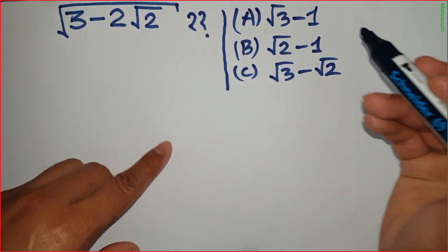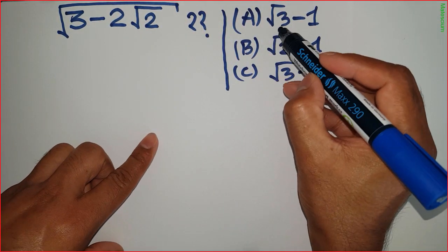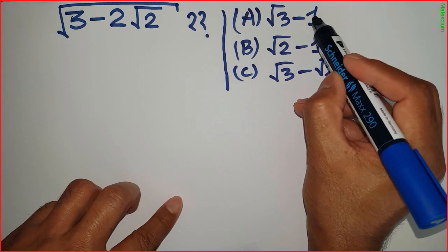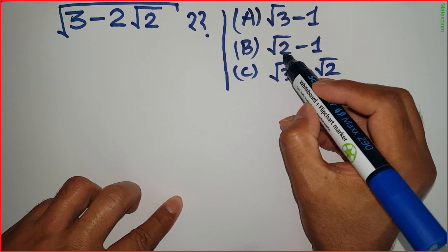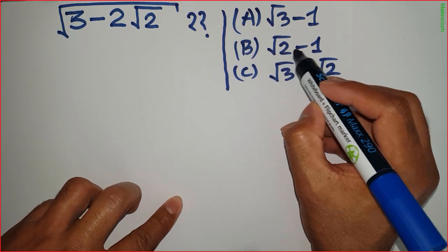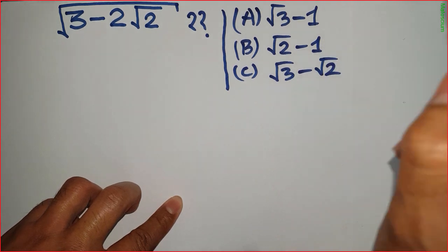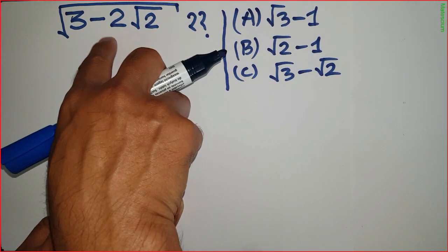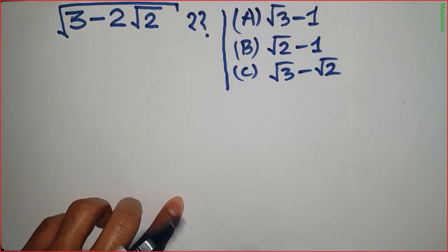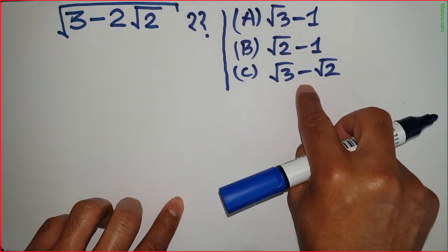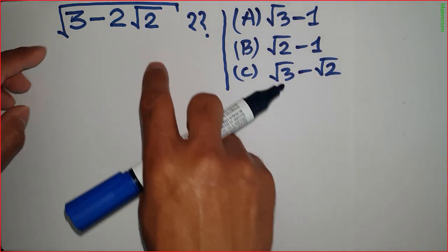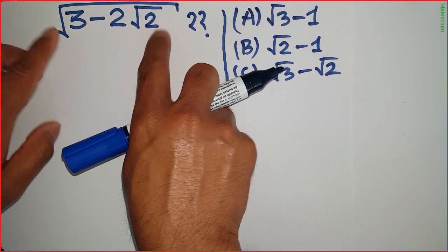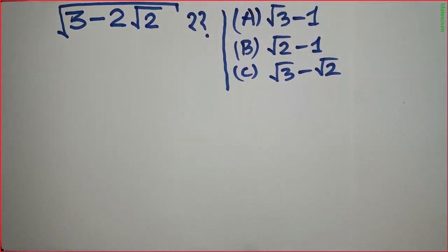One possible solution could be square root of 3 minus 1, another possible solution could be square root of 2 minus 1, or the simplified solution could be square root of 3 minus square root of 2. I will find out the simple solution through a very interesting way.